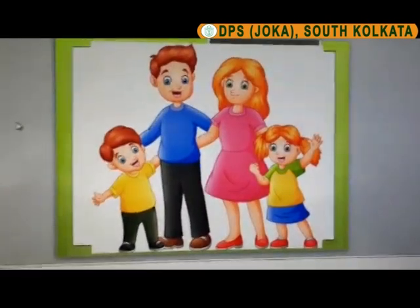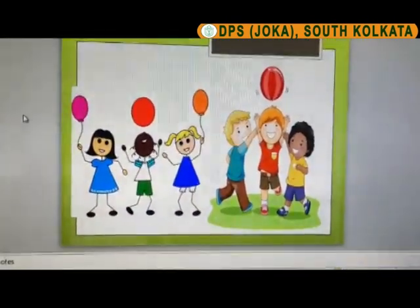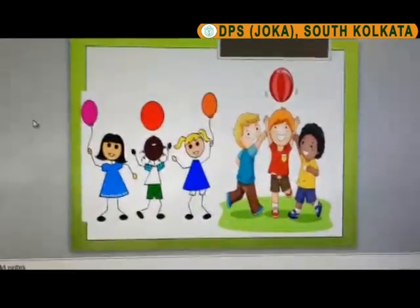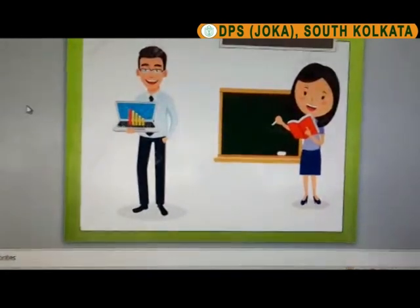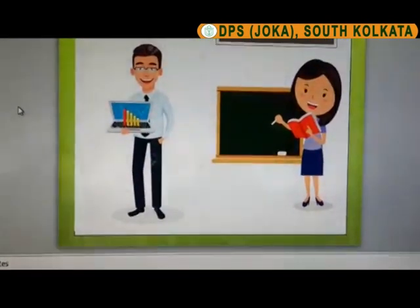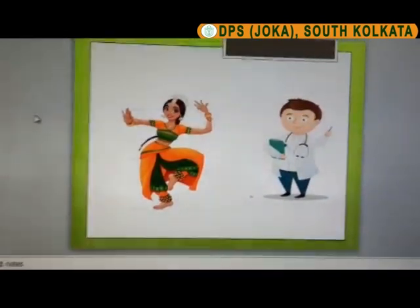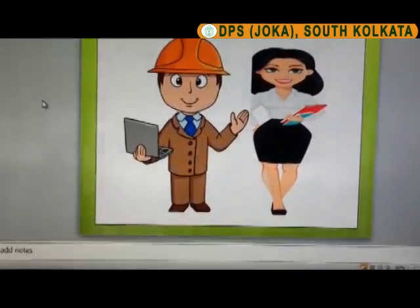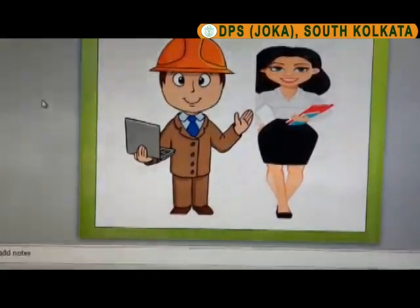Rahul also has uncles and aunts at home, and cousins too — children of his uncle and aunt are called cousins. Rahul enjoys a lot with his cousins and his sister. His father is a bank employee, his mother is a teacher, one uncle is a doctor, one aunt is a dancer, and his younger uncle is an engineer and younger aunt is a lecturer in college.